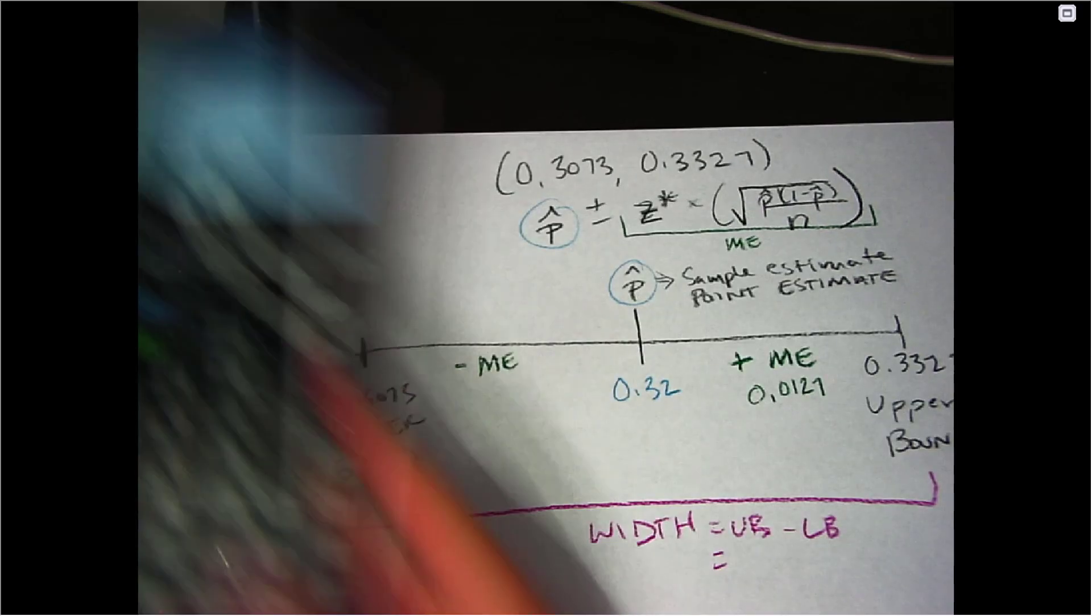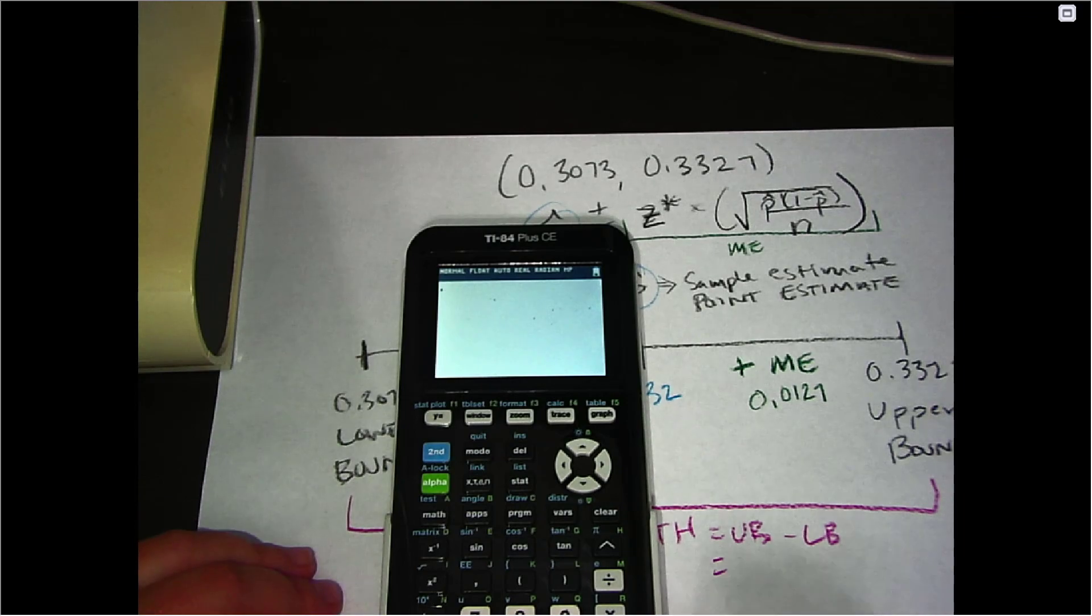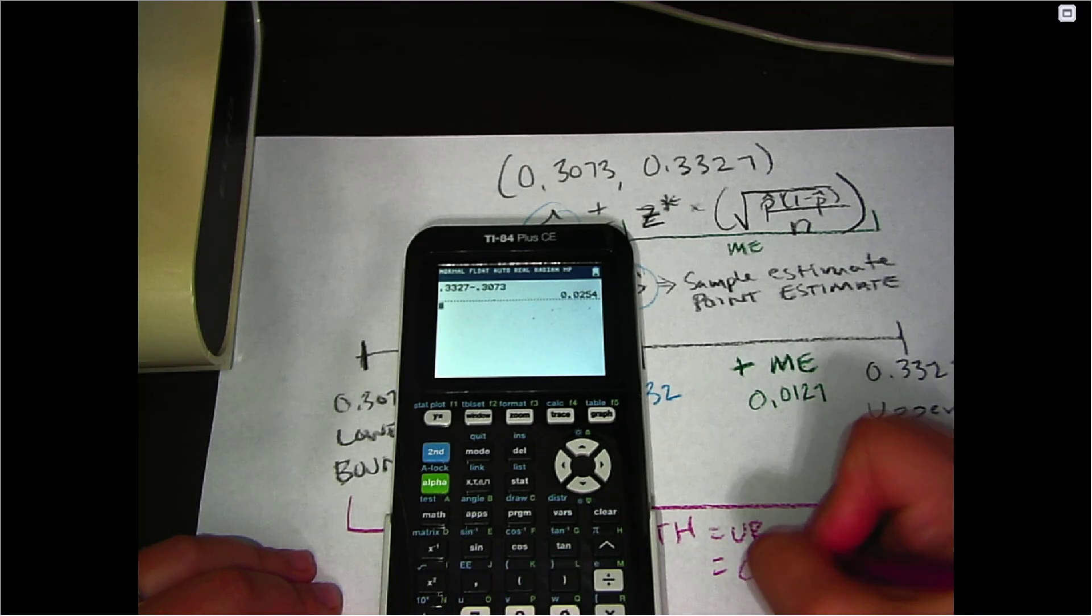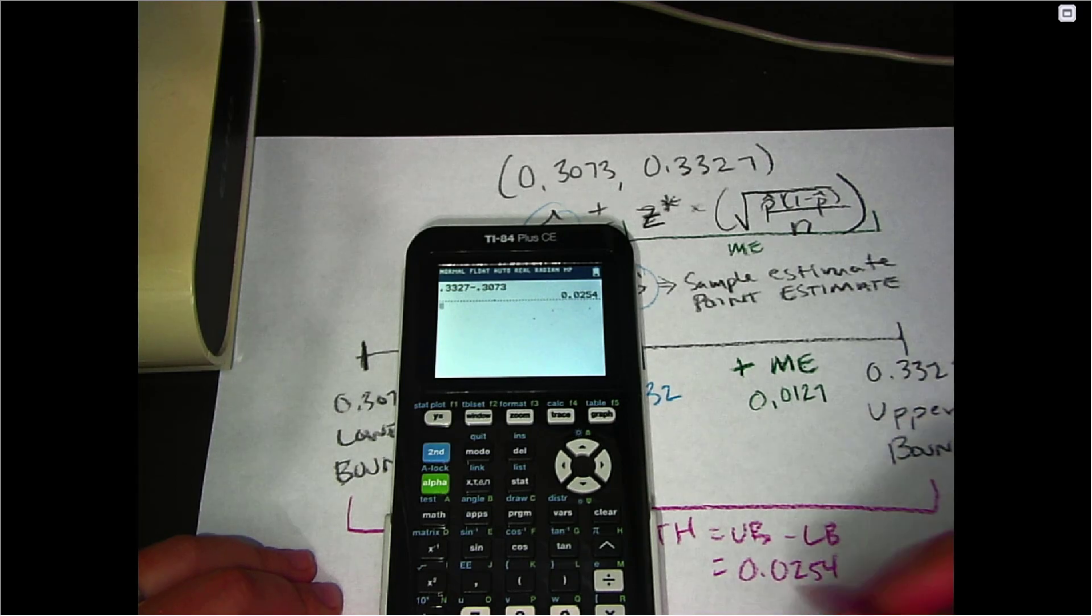So for this problem, if I was to take 0.3327 and I was to subtract 0.3073, I would come up with a width of 0.0254. So this is the width of this confidence interval.